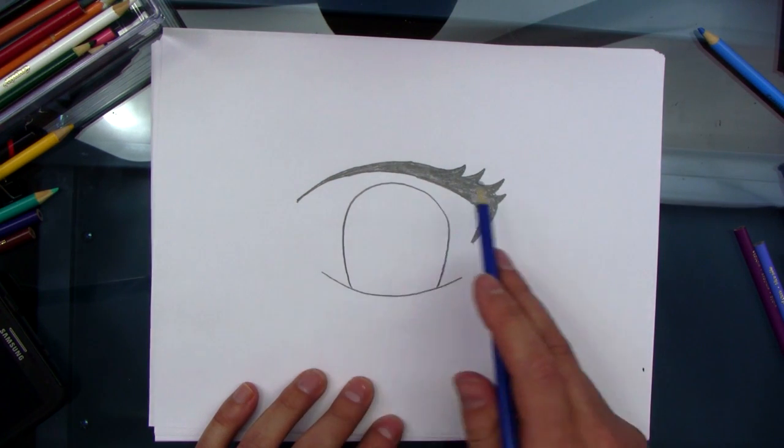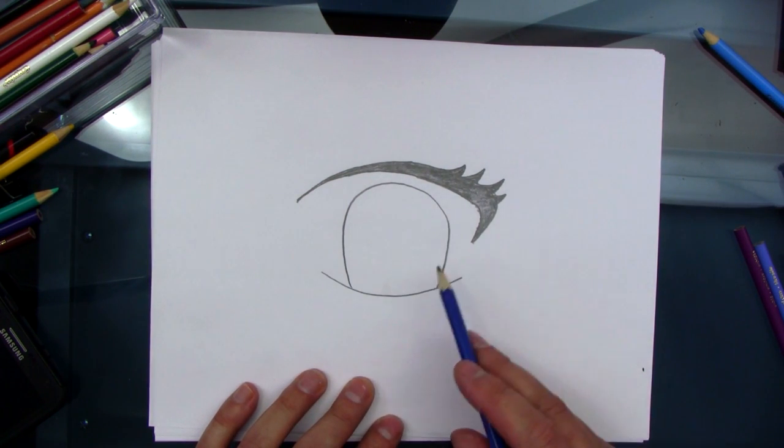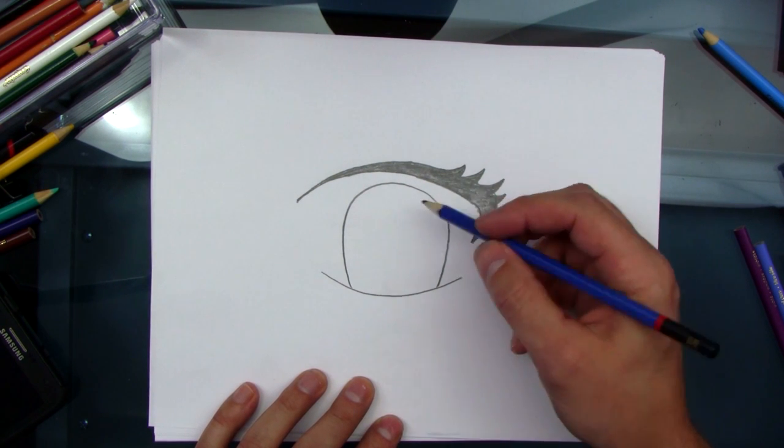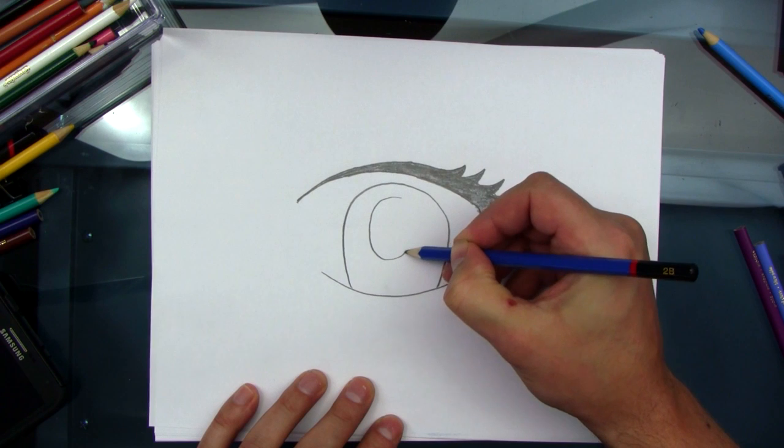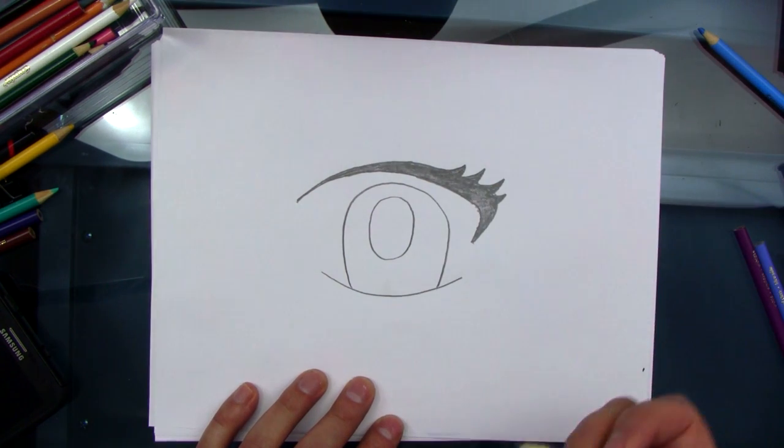So, there we go. We got an eyebrow. We got a cave. Now, we need the pupil. So, I'll put a kind of oval pupil in here. There we go.